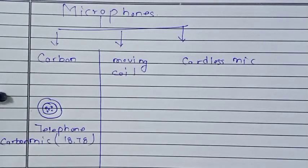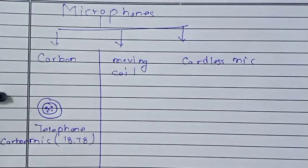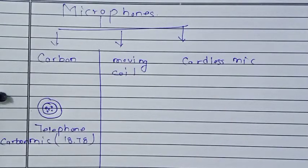In a dynamic microphone, a coil of wire surrounds a magnet and is connected to the diaphragm. The diaphragm vibrates in response to incoming sound waves. When sound waves hit the diaphragm, the coil oscillates back and forth.